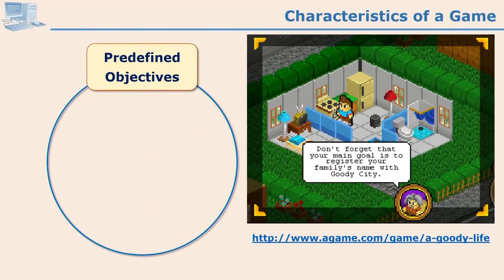From this penguin game, can you identify essential characteristics of a game? For any game, objectives are predefined — the learner exactly knows where to reach. For example, in one particular game, the learner is told they have to establish their own family in a Goodie City. The learner plays and achieves that. So objectives are defined in any game.